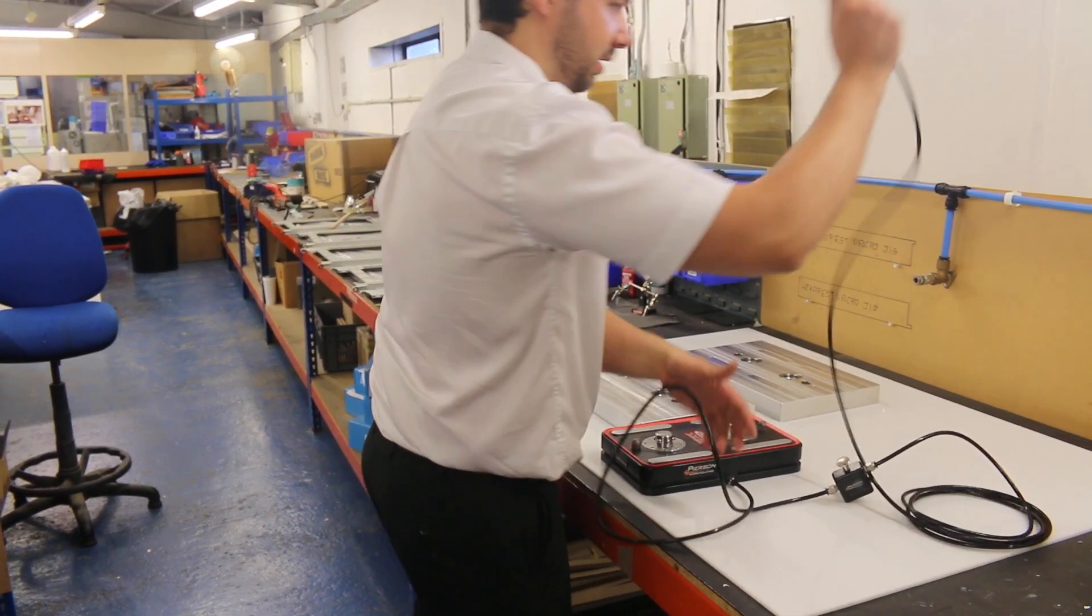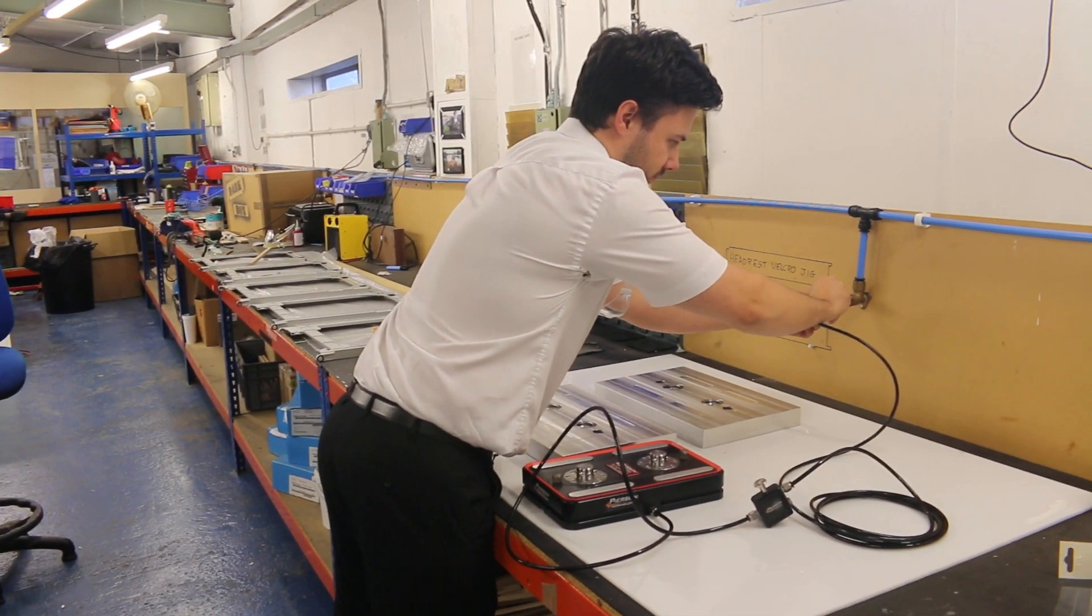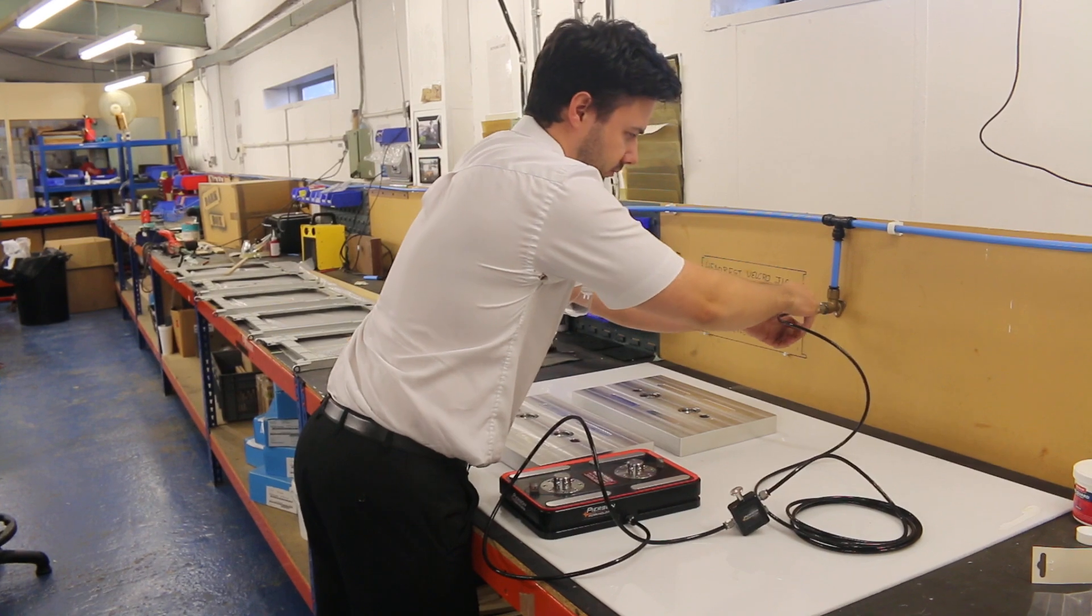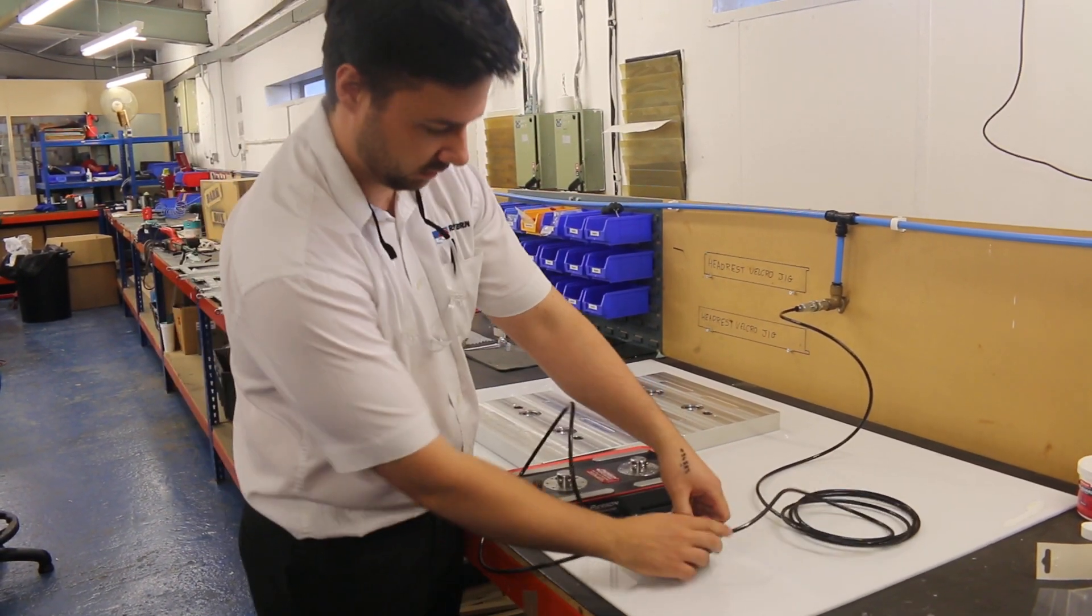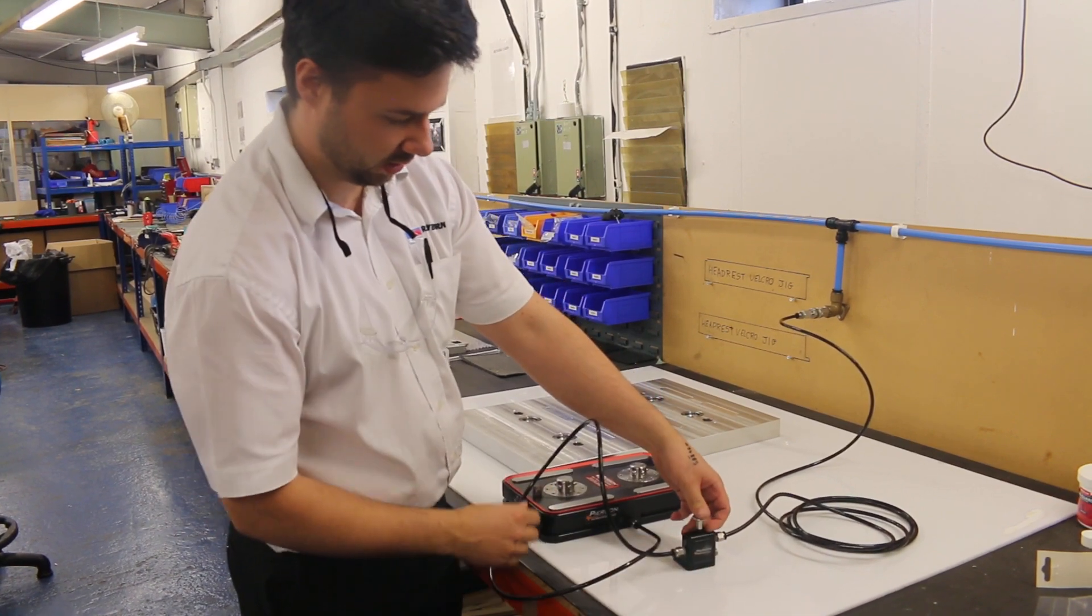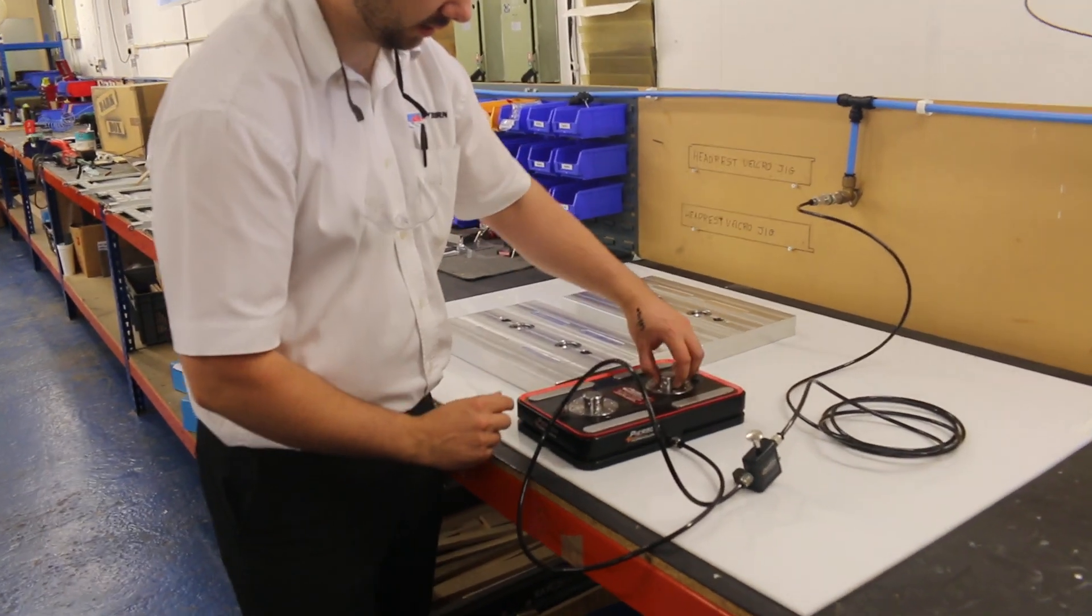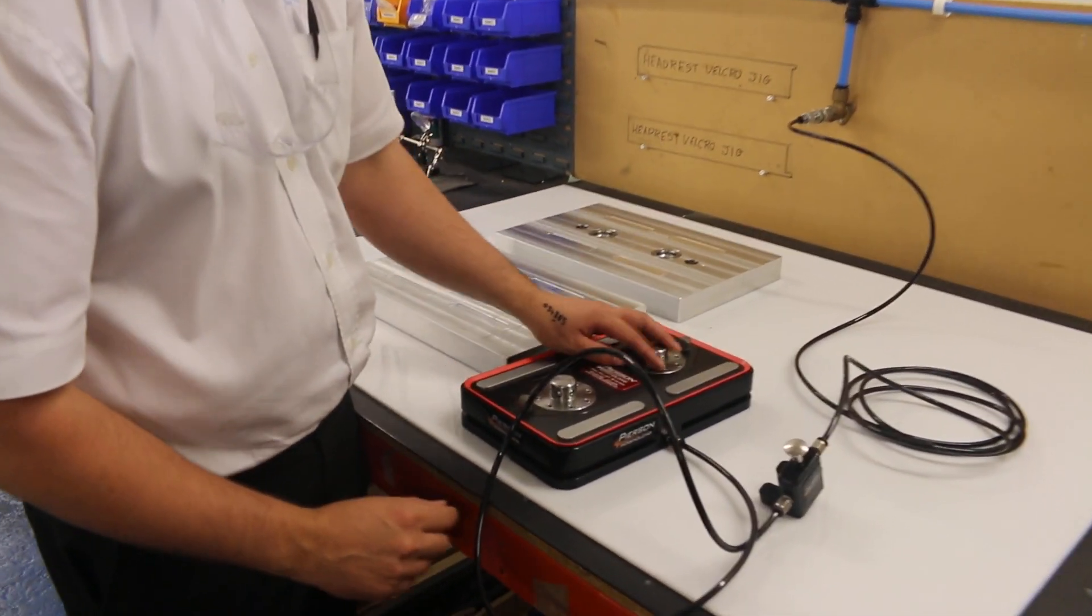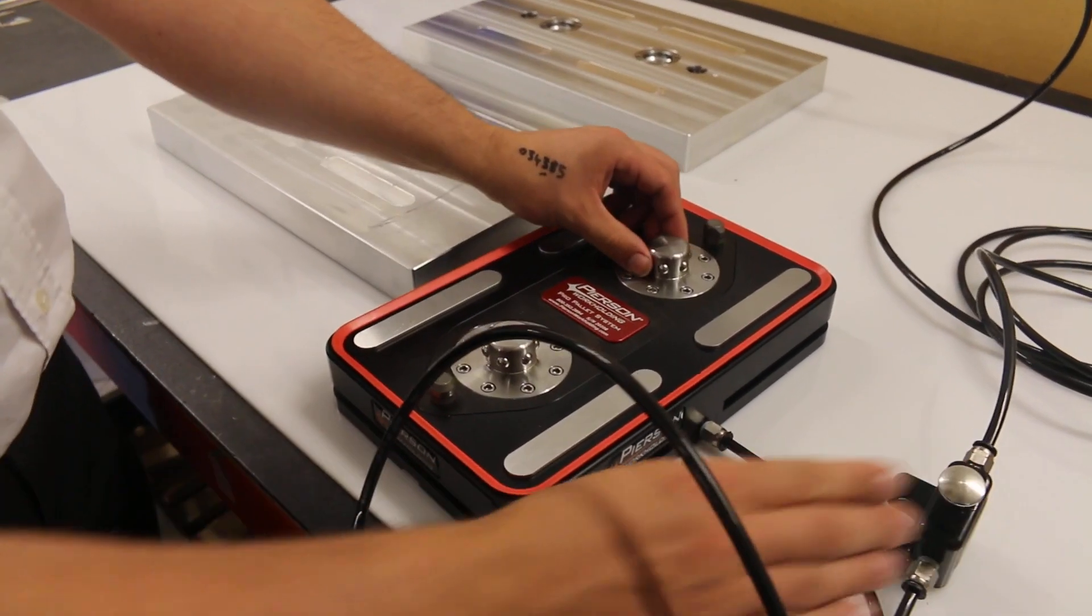Then simply plug it into the air pressure. A successful installation looks like this: you pull up and the ball bearings retract. See that? They retract, and when you apply pressure, they spring out.